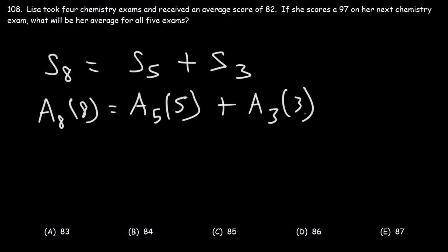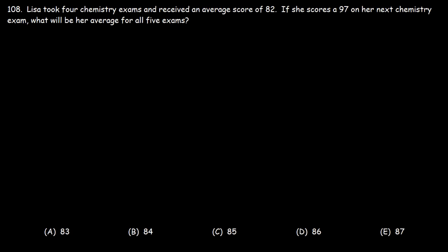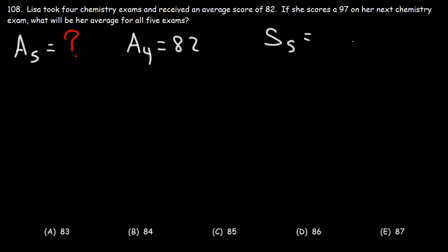Let's focus on problem 108. Lisa took four chemistry exams and received an average score of 82. If she scores a 97 on her next chemistry exam, what will be her average for all five exams? We're looking for a5, the average of all five exams. We know the average of four exams, a4, is 82, and the score on her fifth exam, s1, is 97.